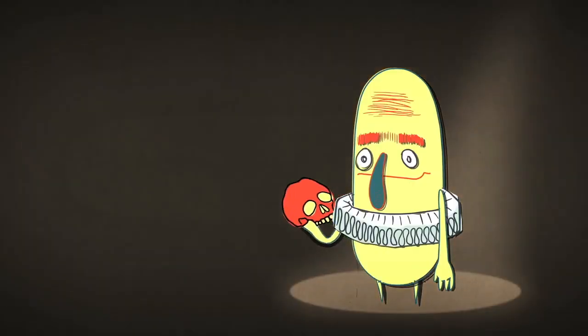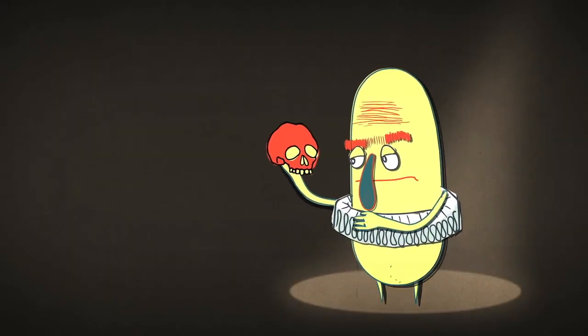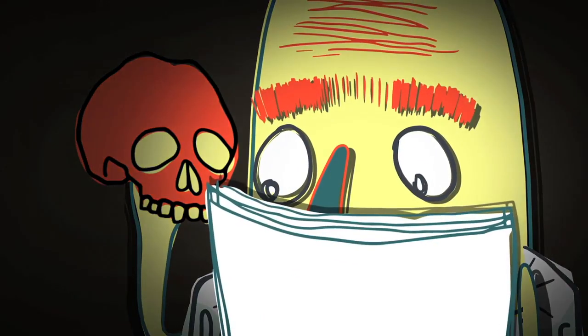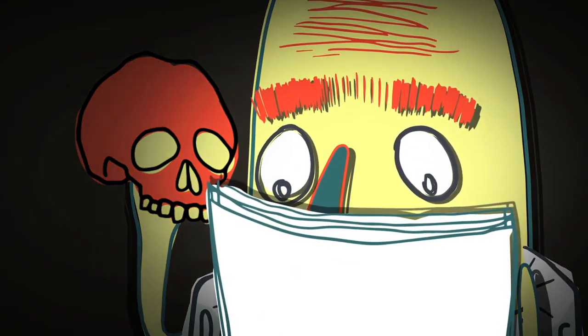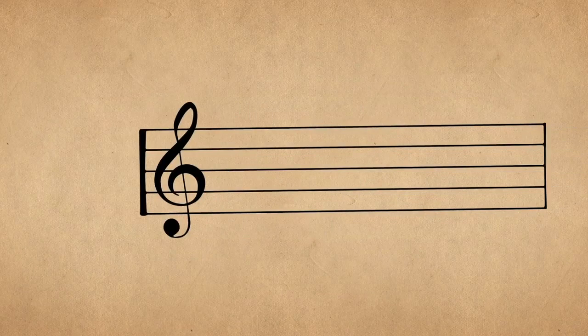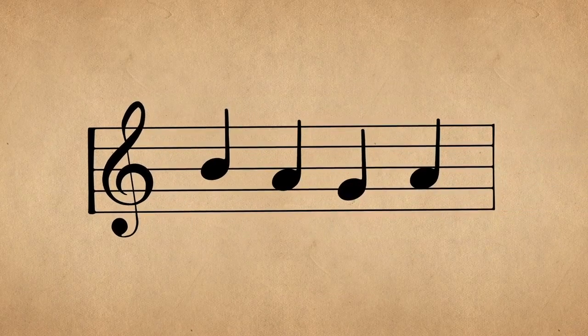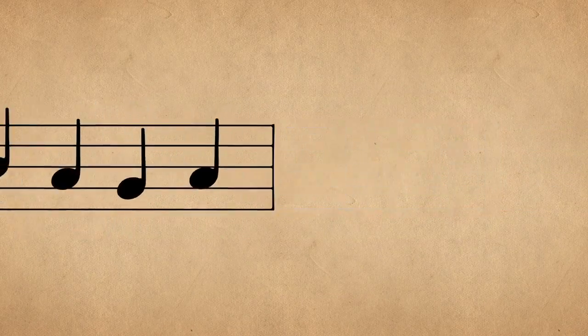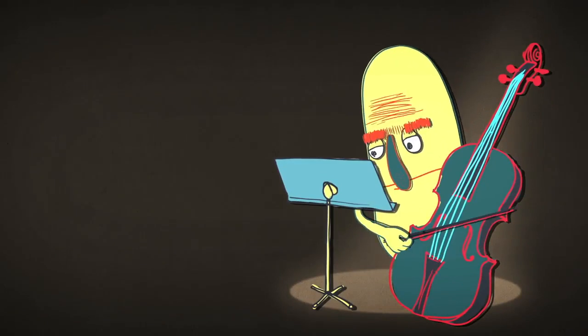When we watch a film or a play, we know that the actors probably learn their lines from a script, which essentially tells them what to say and when to say it. A piece of written music operates on exactly the same principle. In a very basic sense, it tells a performer what to play and when to play it.